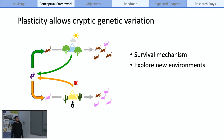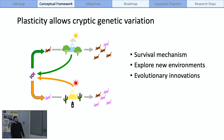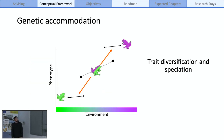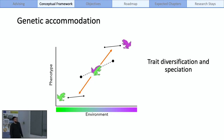Studying plasticity is important because it allows to increase the cryptic genetic variation in populations by giving similar fitness to different genotypes. That's a key survival mechanism for the individual and population levels when facing fast environmental changes like global change. It can also help organisms to explore new environments and has been suggested as a source of evolutionary innovations. Genetic accommodation is a concept related with plasticity.